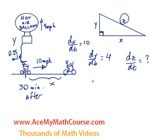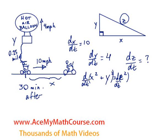We can use the Pythagorean theorem because this is a right triangle: x² + y² = z². Now let's differentiate both sides of the equation with respect to time — take d/dt of both sides. Differentiating x² with respect to time using implicit differentiation gives 2x · (dx/dt). The derivative of y² gives 2y · (dy/dt), and on the right side we have 2z · (dz/dt).